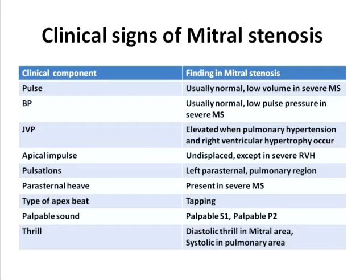JVP can be elevated in a patient with mitral stenosis when it is associated with pulmonary hypertension and right ventricular hypertrophy. The apical impulse is usually undisplaced, except when there is severe right ventricular hypertrophy which moves and occupies the apex, and it can move even more laterally.